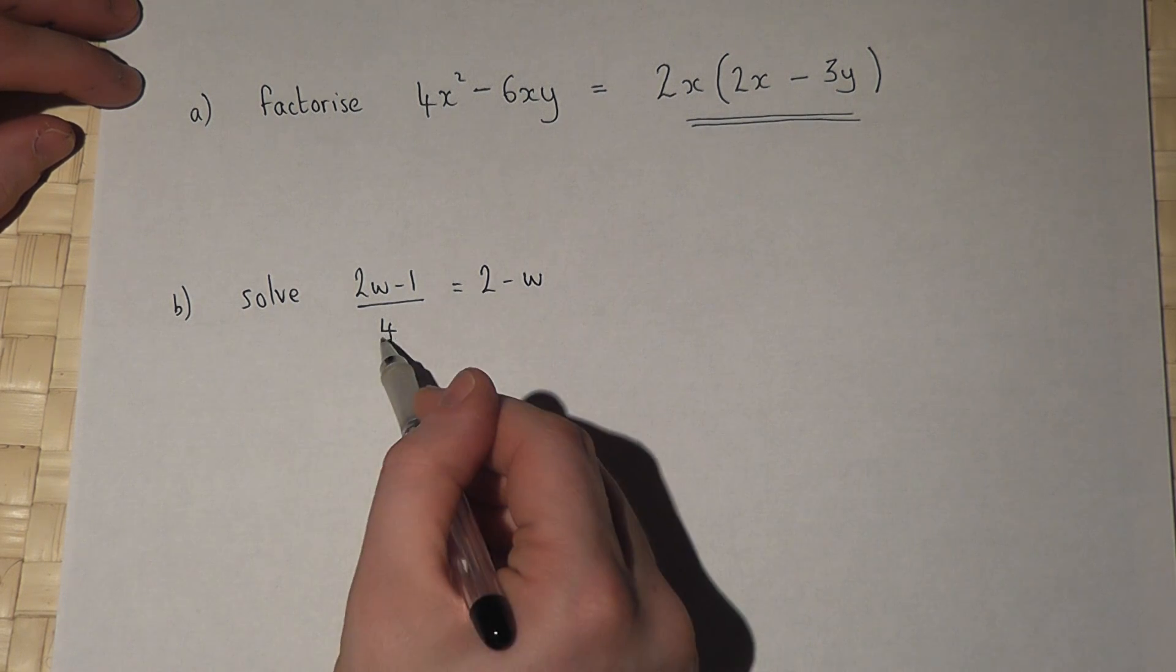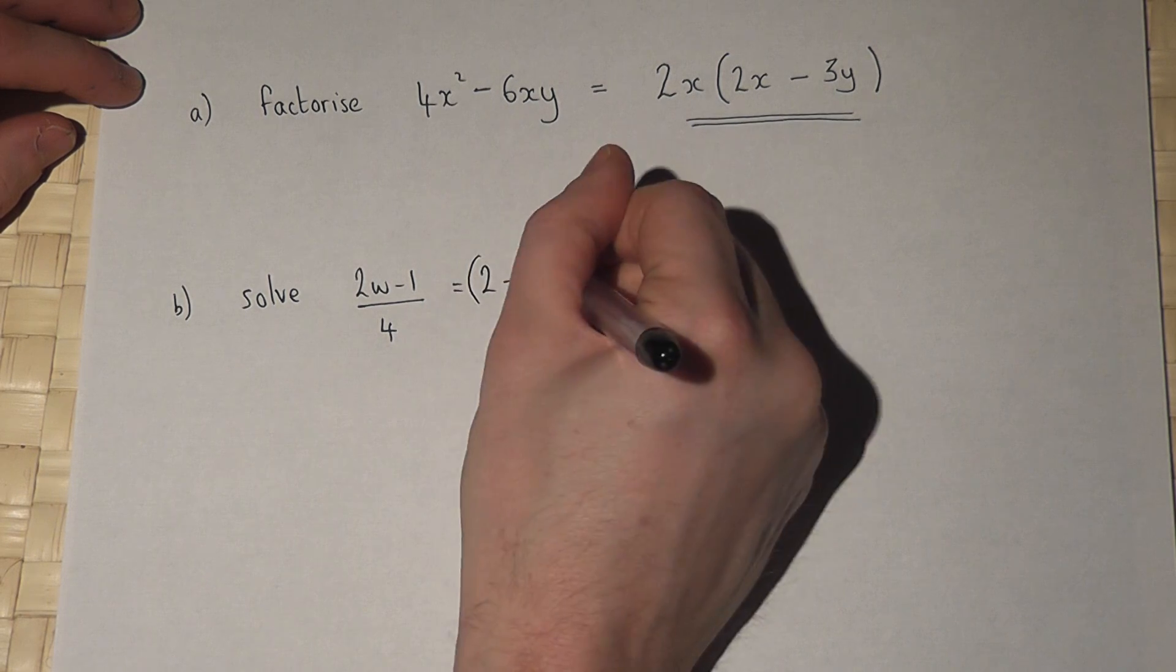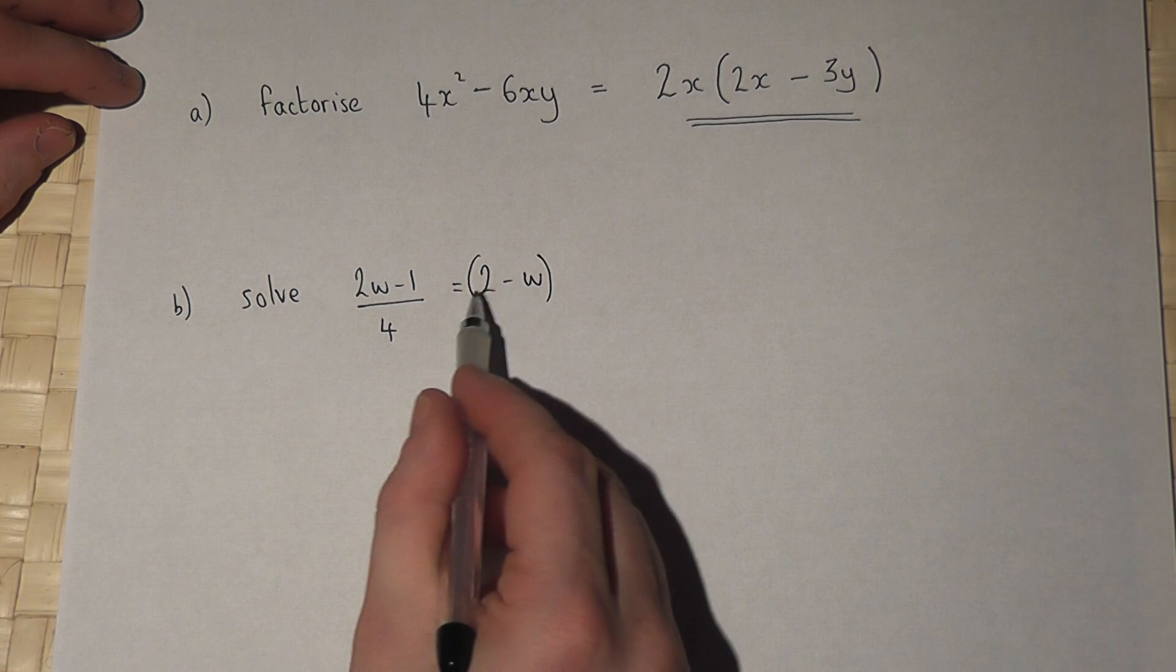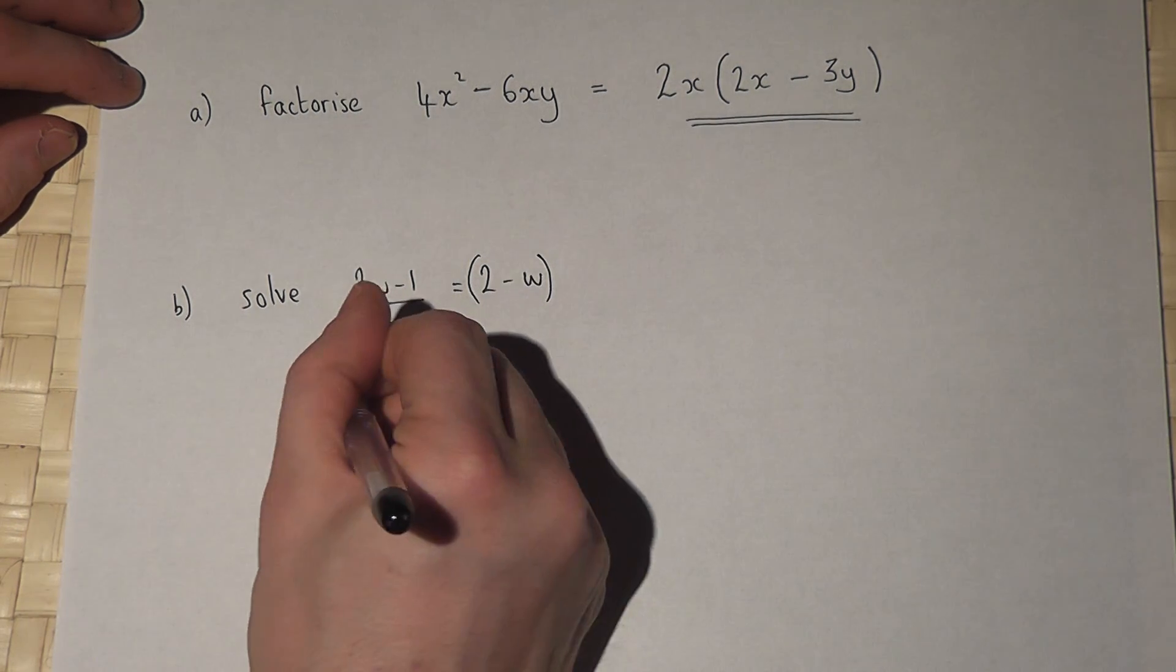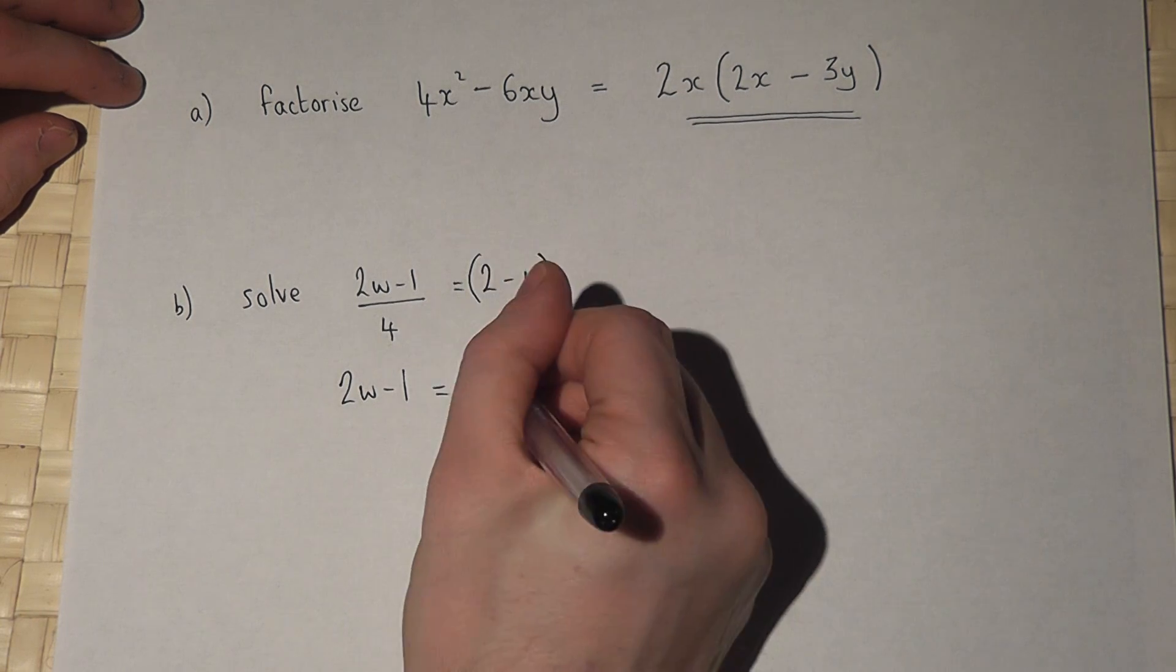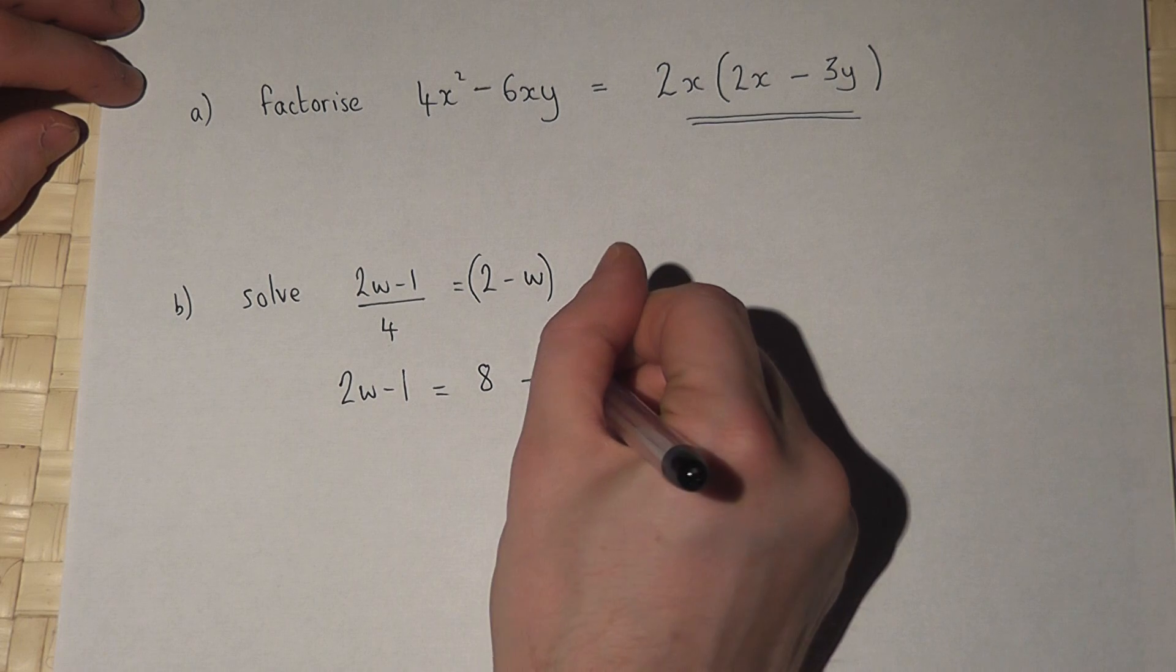Now the method here is to times or cross multiply by the 4. So if I put a bracket there, then I need to times by the 4. So I must times both terms there by the 4. So 2W minus 1 equals 4 lots of the 2, which is 8, take away 4 lots of the W, which is 4W.